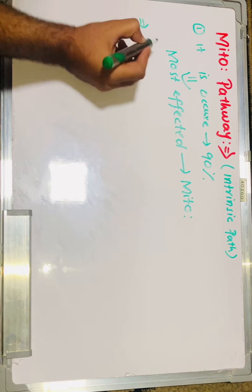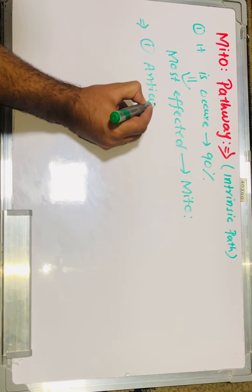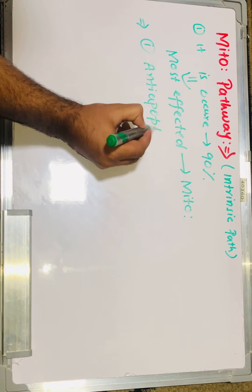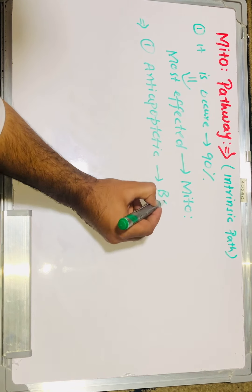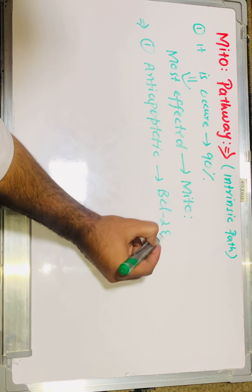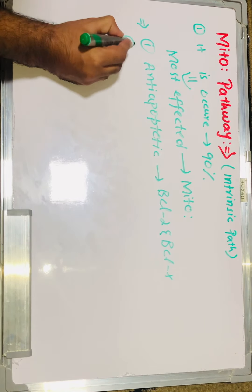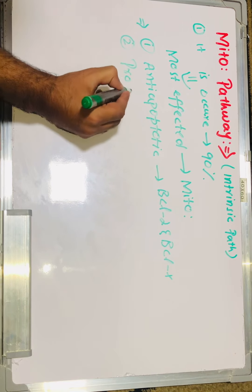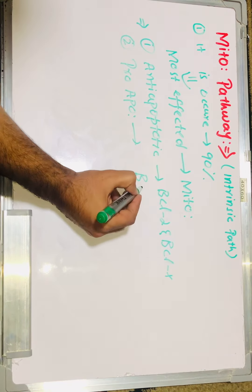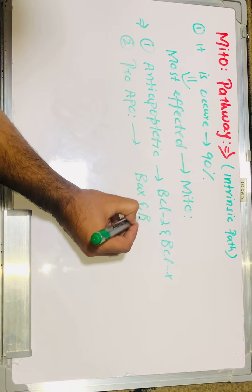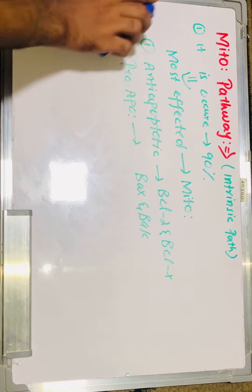We all know that we have anti-apoptotic genes and pro-apoptotic genes. The anti-apoptotic genes are BCL-2 and BCL-X, and the pro-apoptotic genes are BAX and BAD.